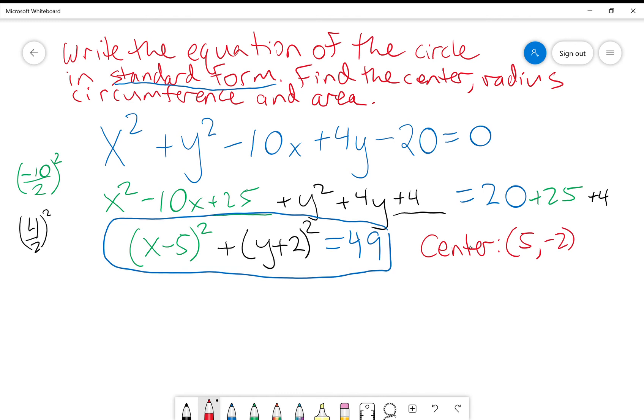My radius is the square root, well, r squared is 49, so I've got to square root that and get 7 for my radius.